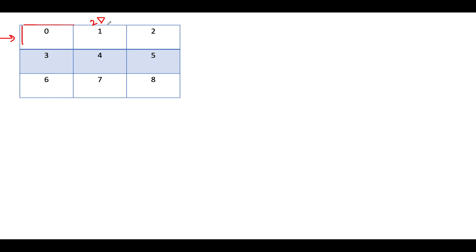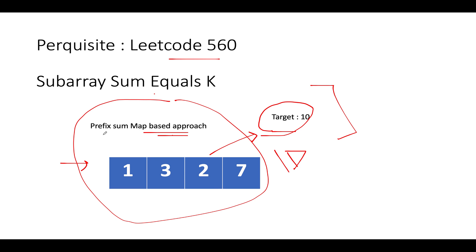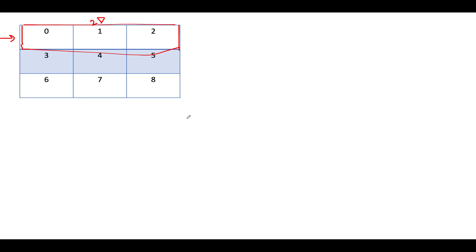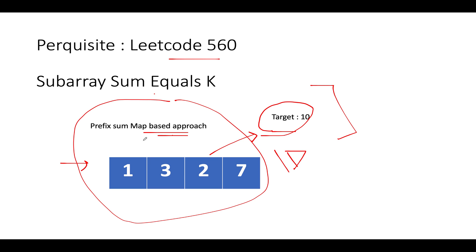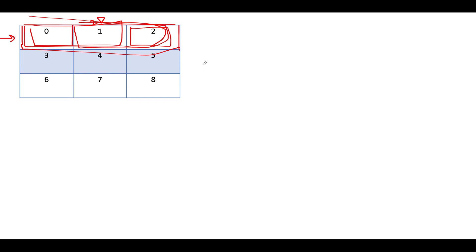Let's go step by step. Consider the case where we only have the first row available. Since we have only one row, we can apply the previous algorithm — the prefix sum plus map-based approach — onto this first row and identify all possible sub-matrices in this row. Using this algorithm, all sub-array combinations within the first row can be identified in time complexity O(n).